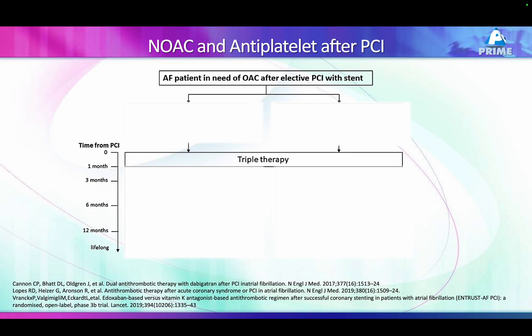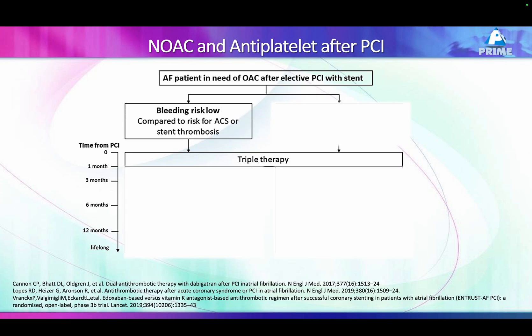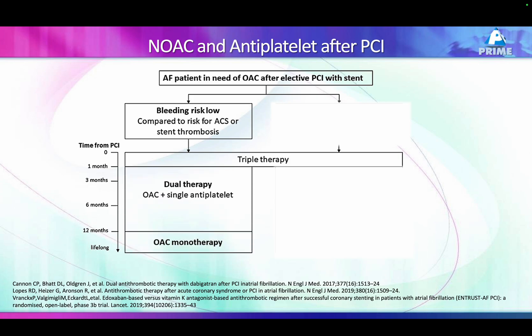Now, if a patient with atrial fibrillation undergoes PCI — angioplasty and stenting — what is our approach? We need to know the bleeding risk and clotting risk. If bleeding risk is low (younger patient, no other comorbidities) but thrombotic risk is high (triple vessel disease, etc.), we give dual therapy — NOAC and aspirin. Triple therapy (NOAC plus aspirin plus clopidogrel) should be given for one month; in a high bleeding risk patient, for only one week. Note: prasugrel and other P2Y12 inhibitors should not be prescribed.